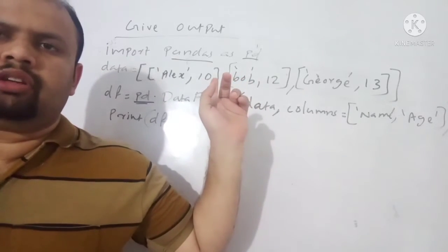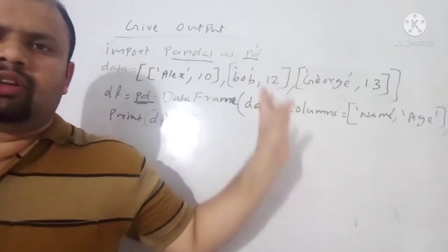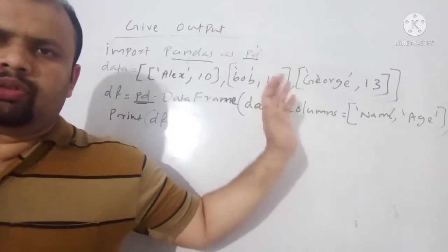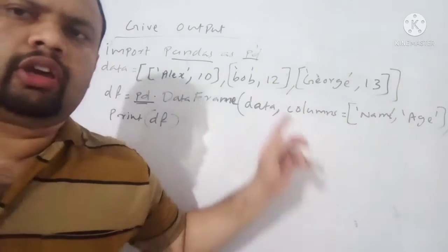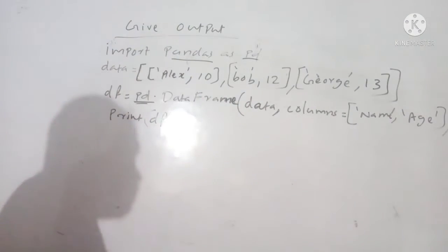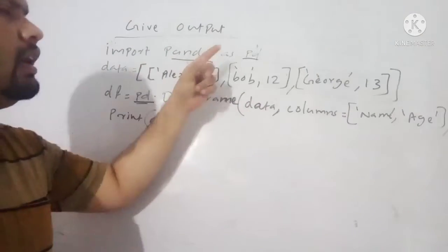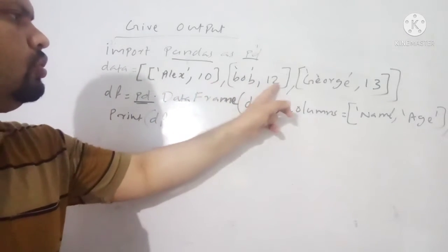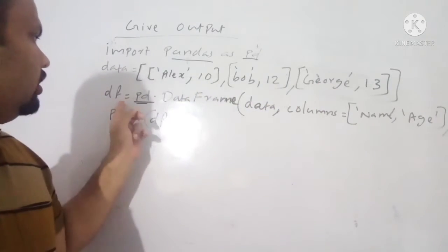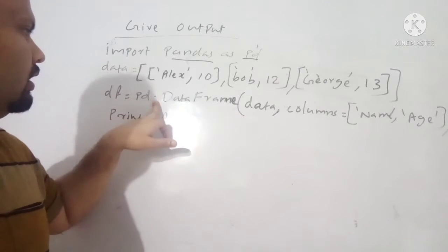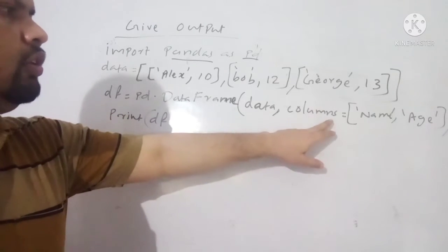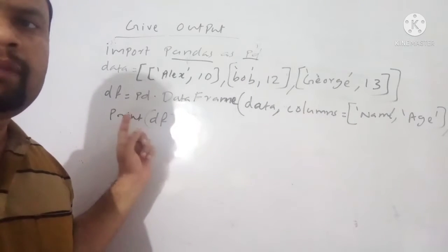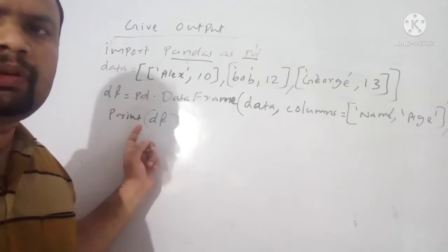Then here you can see the question. So first I will explain the code and after that I will show you how to write the output for this type of questions. So here you can see the code. Import pandas as pd and data equals Alex 10, Bob 12, George 13. df equals pd.DataFrame data, columns equal to name, age, then print df.